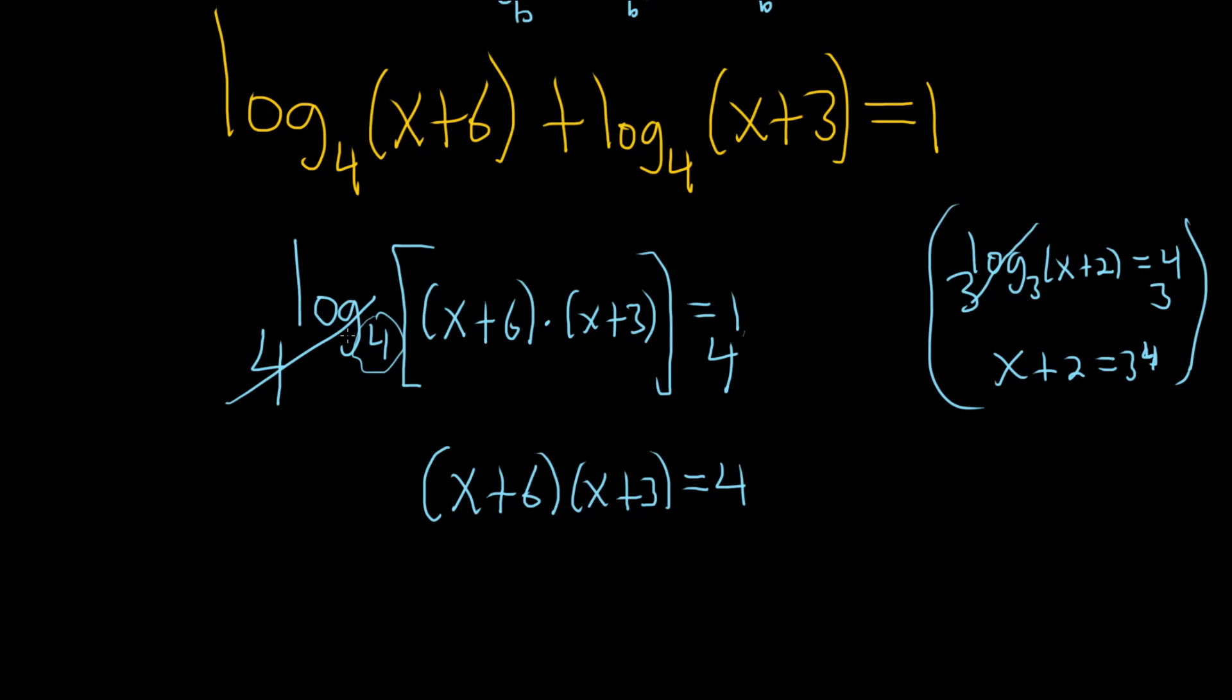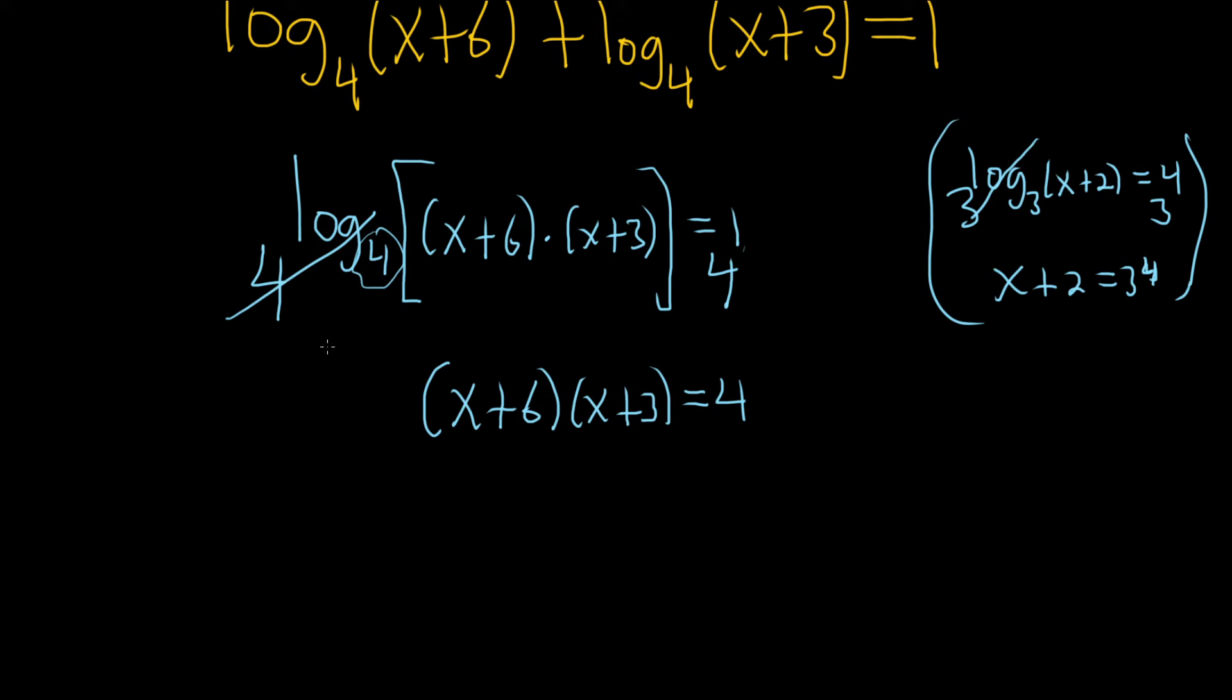This is a quadratic equation. So what we'll do now is we'll multiply everything out and set it equal to 0 and try to solve it. Let's go ahead and distribute. So we'll take x and multiply by x. It's going to give us x squared. And x times 3 is going to give us 3x.